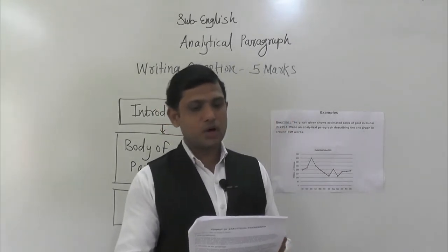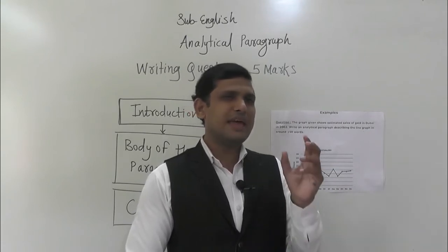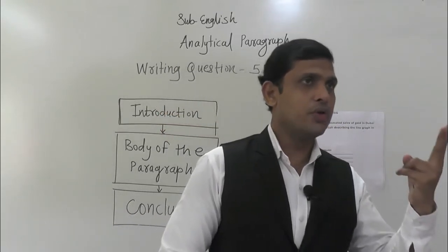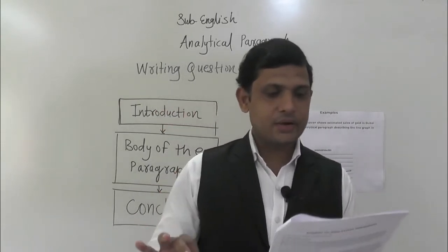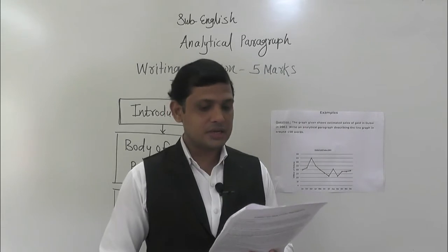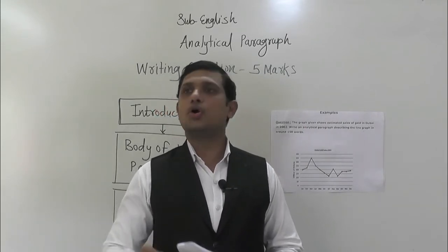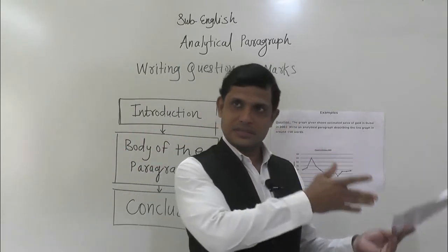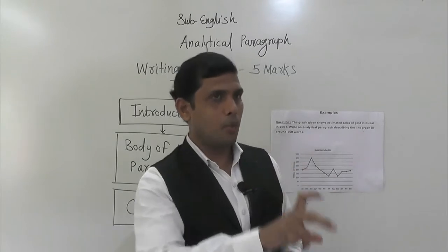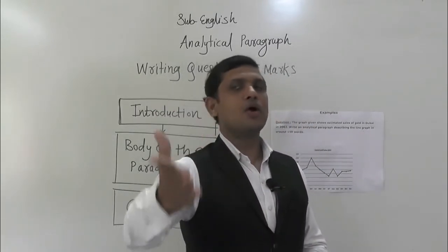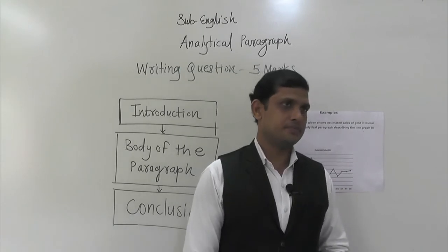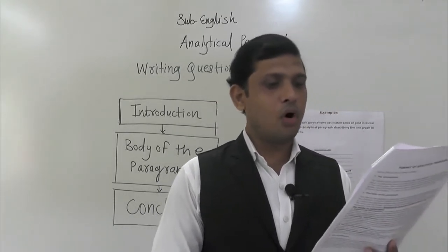The introduction explains in one or two lines the subject of the graph and its aim — it should not be four or five lines. The body explains in detail what the graph is about: use relevant figures, explain trends, make comparisons and contrasts, and divide into sub-paragraphs if required. If you want to explain different concepts about the same graph, you can add a second paragraph. It is not mandatory to have only three paragraphs — if you have many concepts in the middle, you can make additional paragraphs.